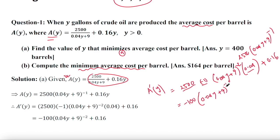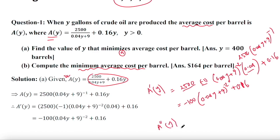So A prime of y equals 2500 times minus 1 times (0.04y + 9) to the power negative 2, times 0.04, plus 0.16. Now we need the second derivative, so you need to differentiate this first derivative again.